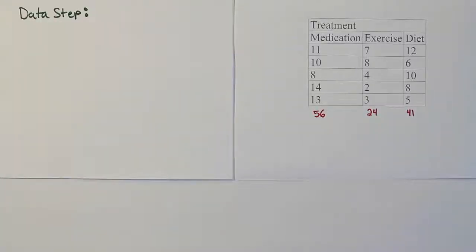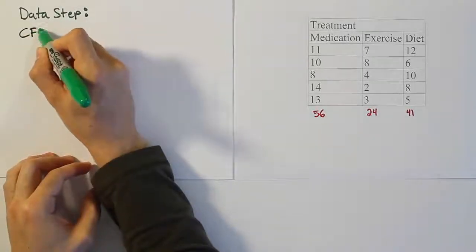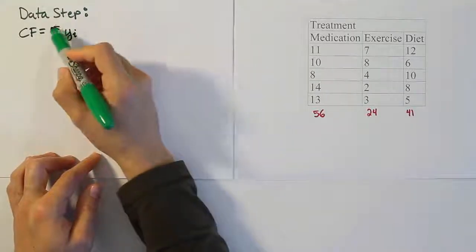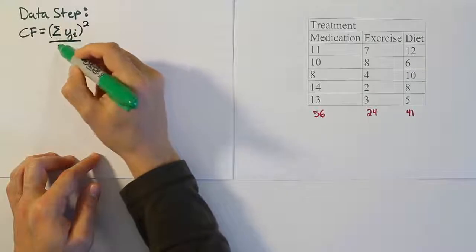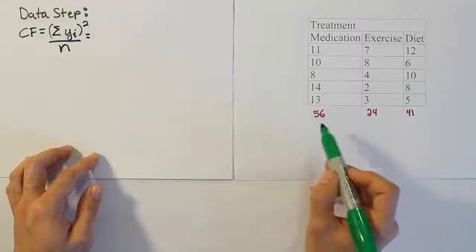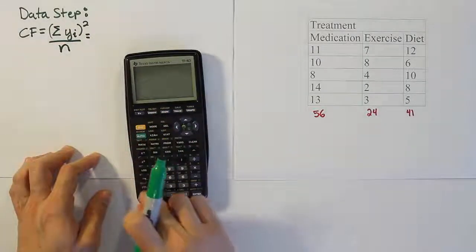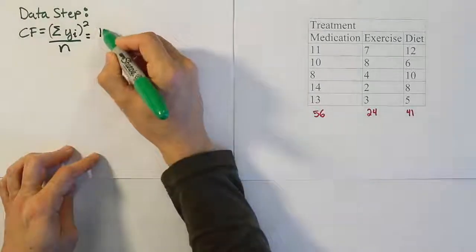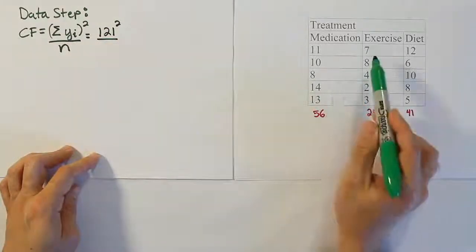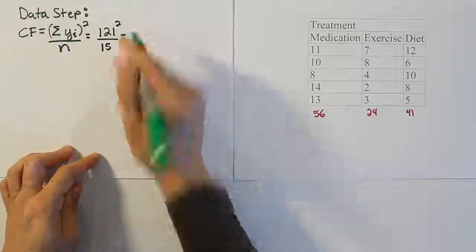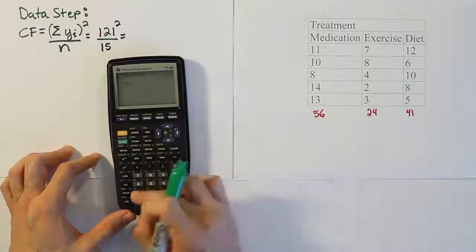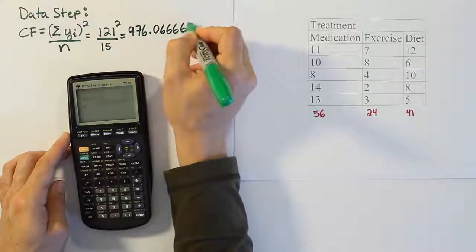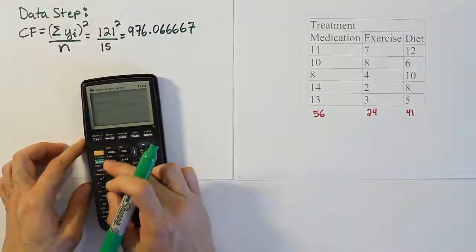To fill in our ANOVA table, we first calculate the correction factor. The correction factor is the sum of all data values squared, divided by the total number of values. Adding the column totals gives 56 + 24 + 41 = 121. So the correction factor is 121² / 15 = 976.0667 (repeating). We'll store that in the calculator for later use.